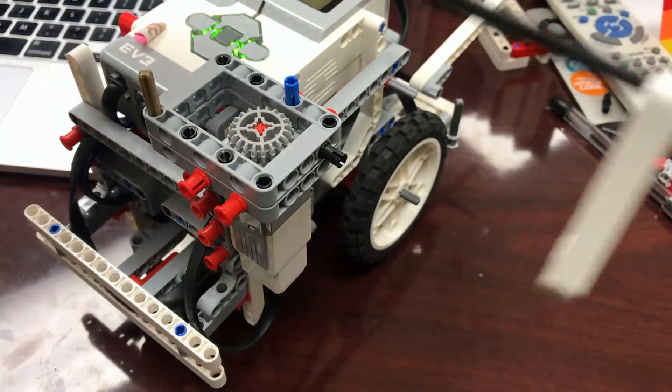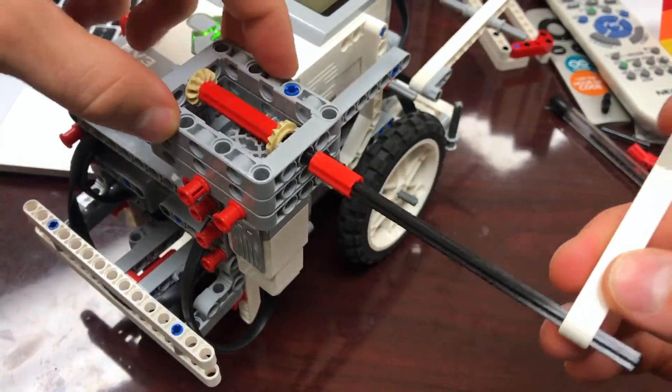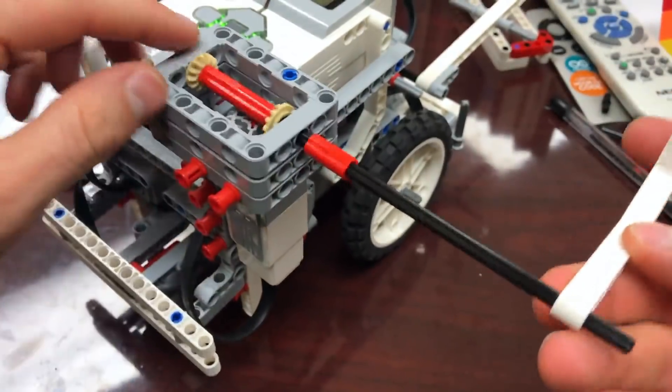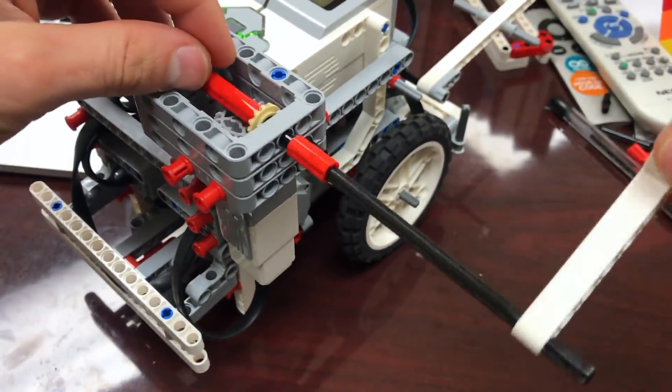To put it on the robot, I'm just going to slide it over this axle, clip it in here and we are ready to go.